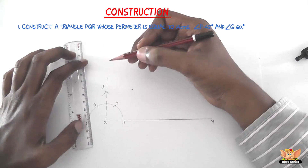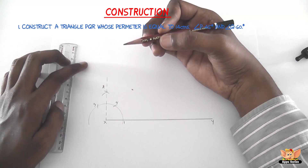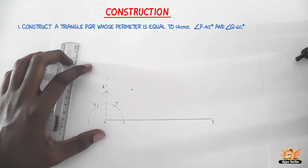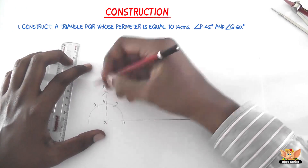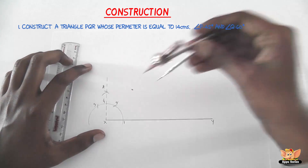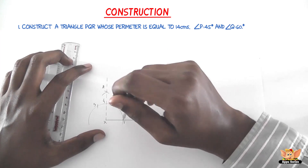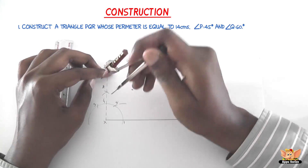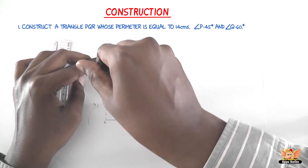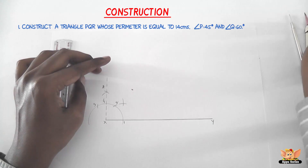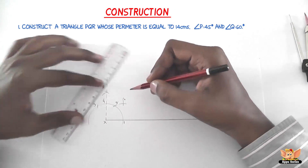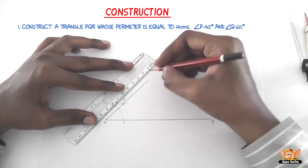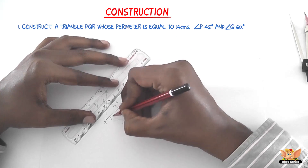We need 45 degrees, so we bisect 90 degrees. Name the point on the 90-degree arc as 5. With 1 as center and radius more than half of arc 1–5, draw an arc. With 5 as center and the same radius, cut that arc and name it 6. Join X6 and produce it to D.